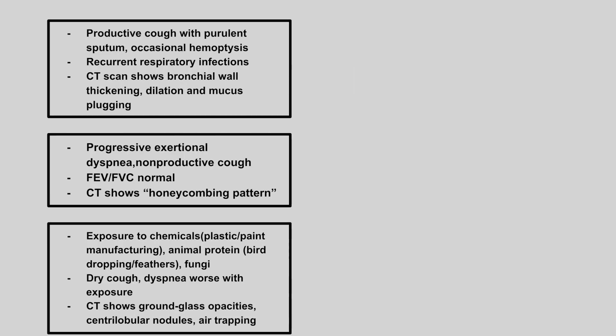Next, we have a patient who has a productive cough with purulent sputum, occasional hemoptysis, recurrent respiratory infections, and CT scan shows bronchial wall thickening, dilation, and mucus plugging. This is bronchiectasis.